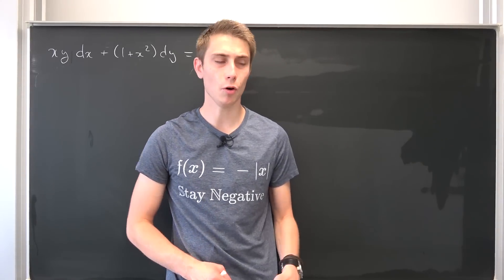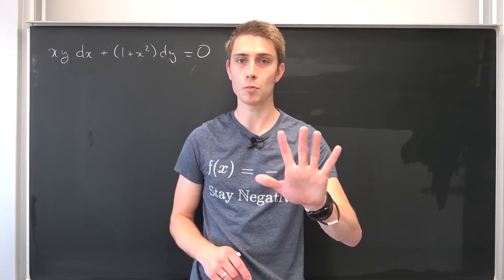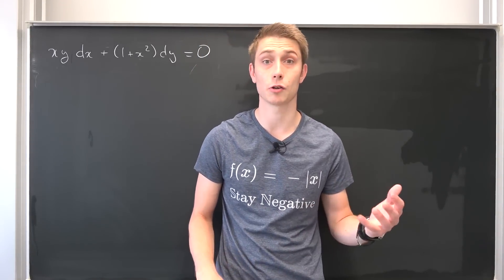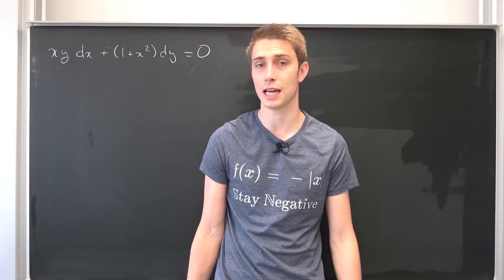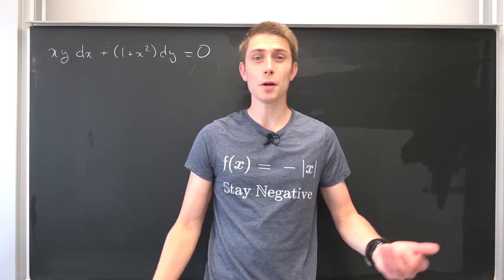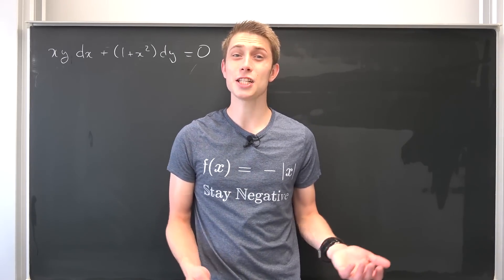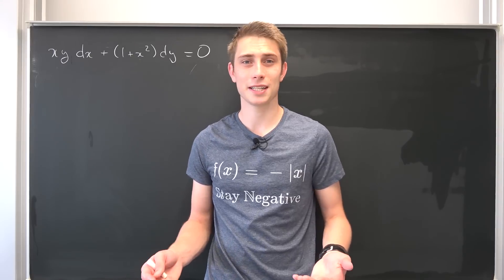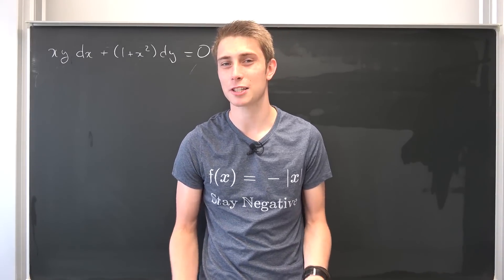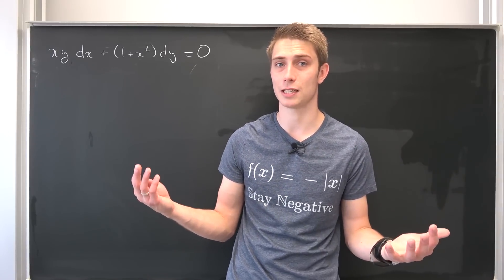So what we did before, we have found five forms of integrating factors, which are kind of common. And we were working with them, but what about a situation where our h — our integrating factor — is just a multivariable function? How should we deal with something like this?